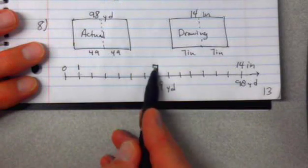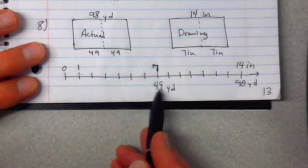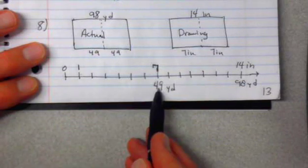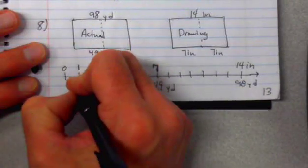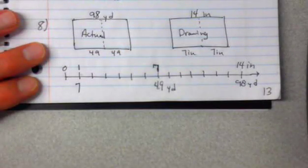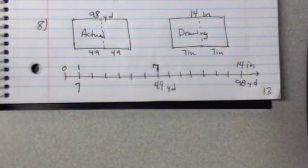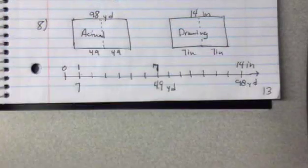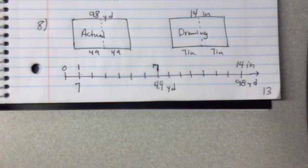Well if 7 is 49, I can divide 7 by 7 to get 1, and I can divide 49 by 7 and that would give me 7. So there's my scale, 1 to 7. Pretty straightforward once you start putting it on number lines. There's my outcome, that's my scale.